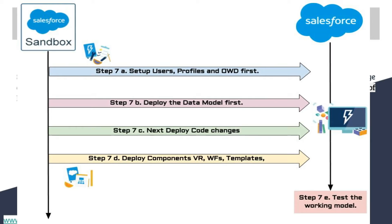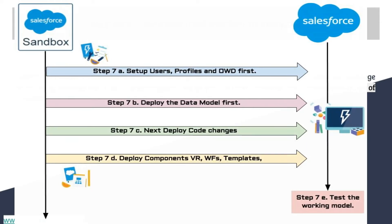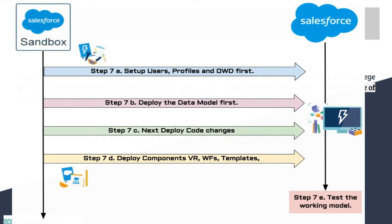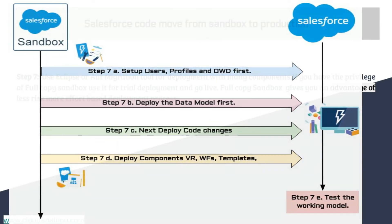The third sub-step is pushing the code changes. Be very careful here because the data model already exists and your code changes must go in correctly. If it is failing, it might be due to missing fields, missing custom settings, or missing labels being accessed by the code. The last sub-step is the remaining configuration changes such as validation rules, workflow rules, workflow templates, and so on. Once deployed, always test the working model before end users encounter surprises.